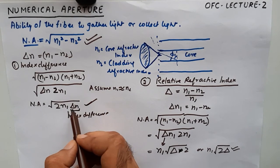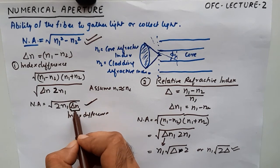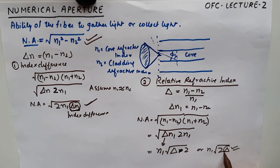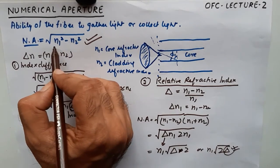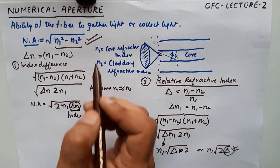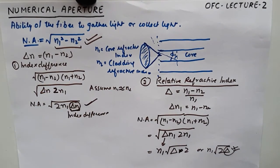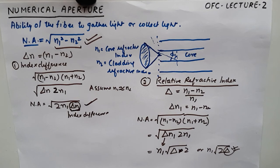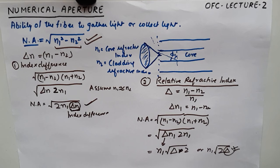So these are the three formulas to remember: formula one in terms of n1 and n2 directly, formula two in terms of index difference Δn, and formula three in terms of relative refractive index Δ. That's about it for today's tutorial. I hope you liked it — if you did, give it a thumbs up and consider subscribing to the channel. See you around, bye!